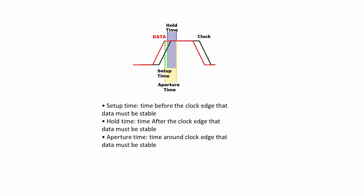A flip-flop has some unique timing conditions that must be met for it to operate properly. When a clock pulse is applied, the data must have been at a certain level for a period of time beforehand — this is called the setup time. The data also has to remain stable during the read time of the circuit, which is called the hold time. The combination of setup time and hold time is called the aperture time.